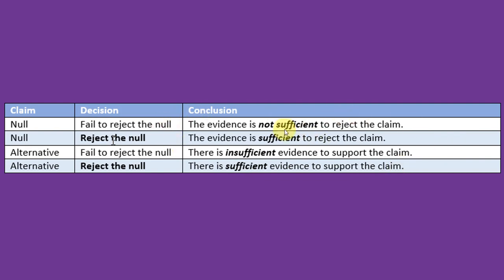So keep these three tables with you and use those to help you set up the hypothesis to determine the tail of the test and define the critical values. And then once you know which hypothesis is the claim and your decision, you can come up with the conclusions from this table. Thank you.